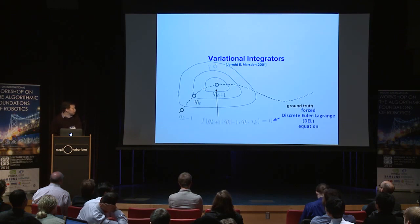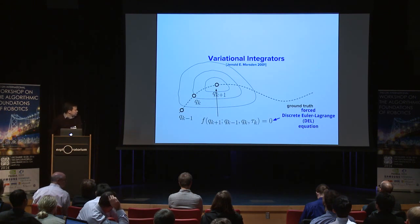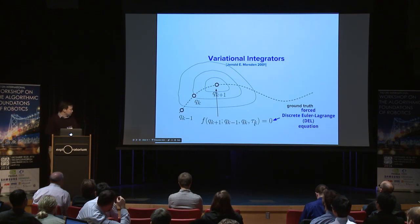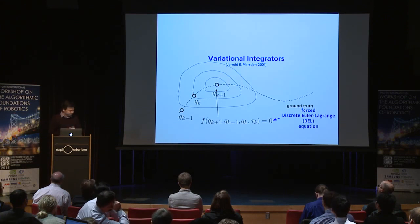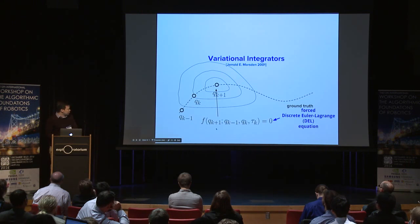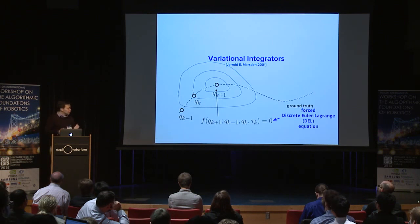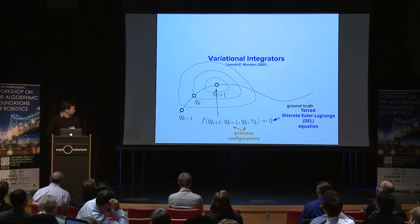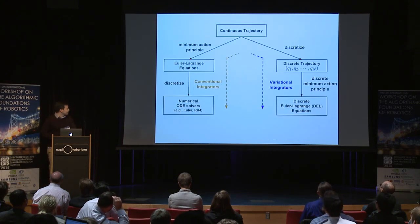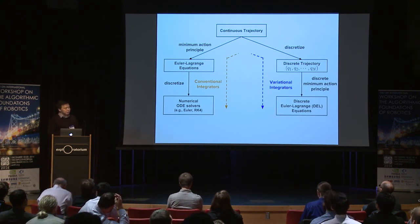It is called variational integrators. The magical function is called the Forced Discrete Euler-Lagrange (DEL) equation. This function takes two previous discrete configurations and the work done by force during a small time step, and we solve for Q_{k+1}, the next configuration. So the dynamic simulation problem becomes a root-finding problem.